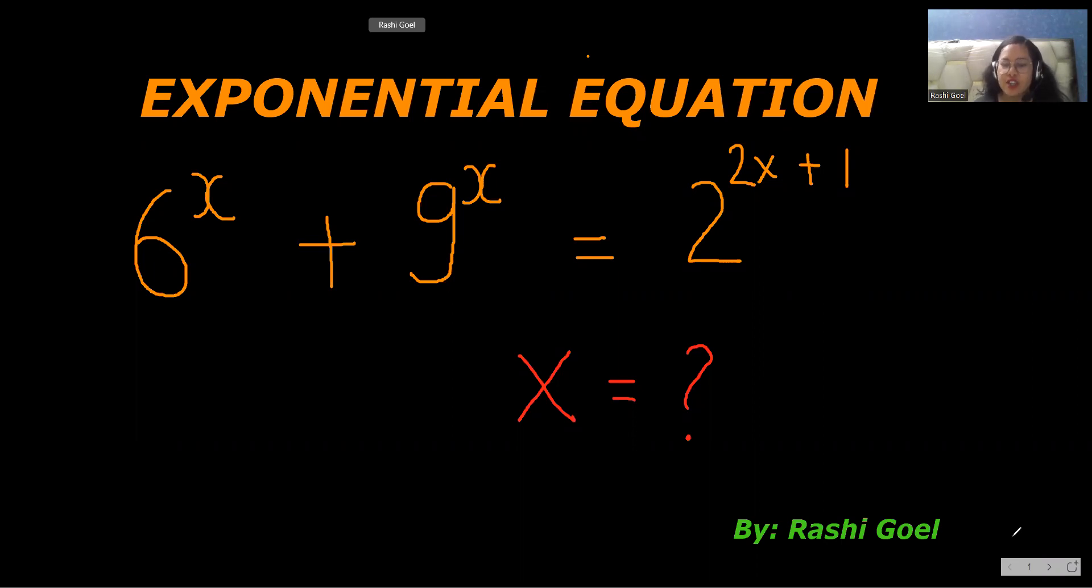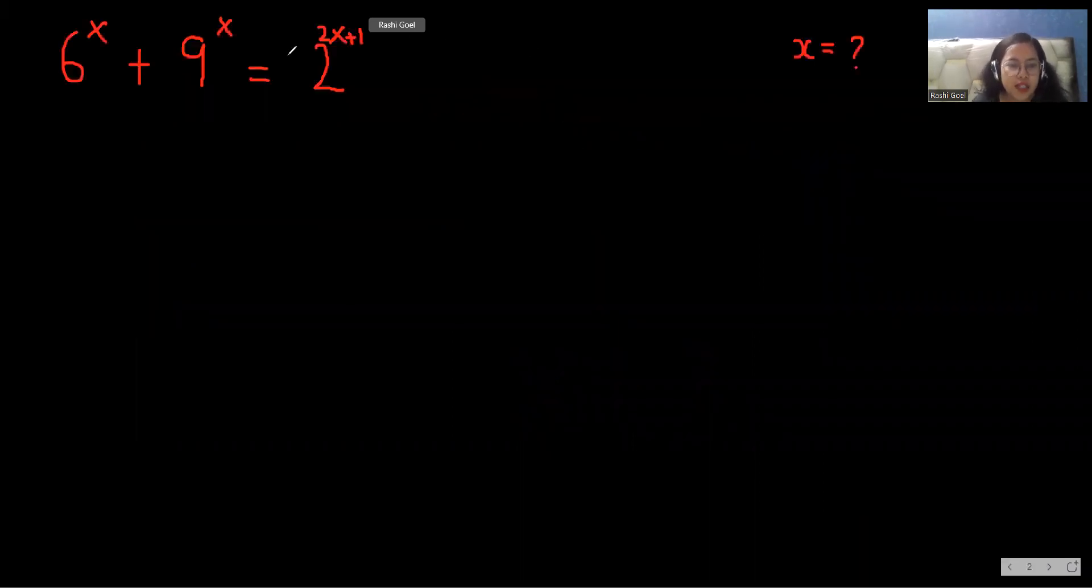So let's solve this equation and find the value of x. Our equation is 6^x + 9^x = 2^(2x+1).